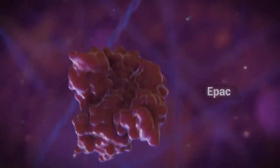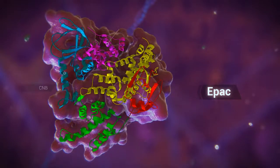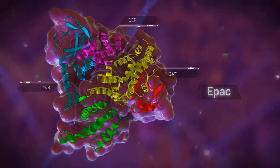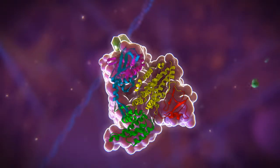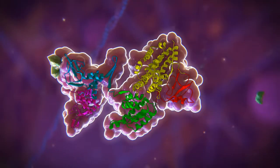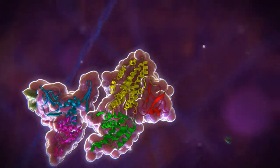EPAC, a guanine nucleotide exchange factor for RAP1, is in the cytosol in an inactive closed conformation. When cyclic AMP binds, EPAC folds open into an active conformation.